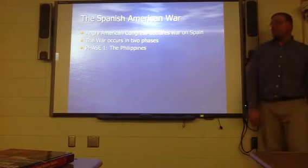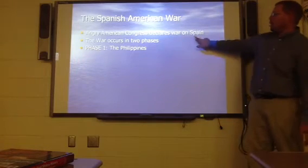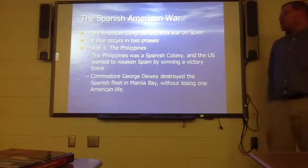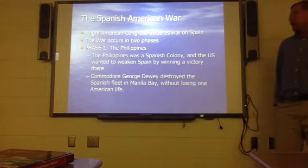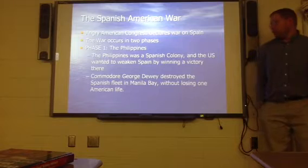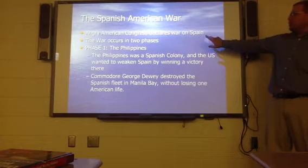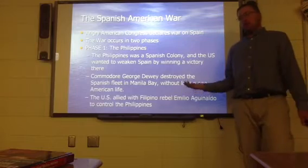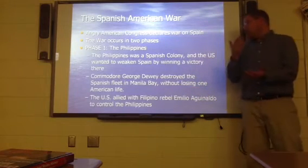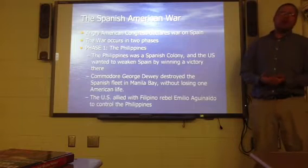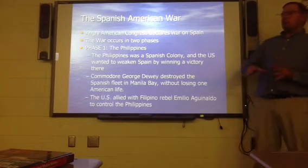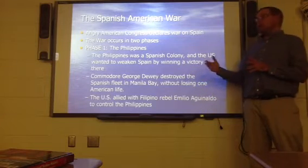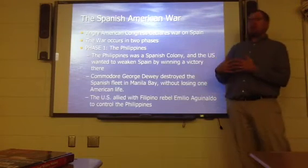The war occurs in two phases. Phase one is the Philippines. The Philippines were a Spanish colony, and the U.S. wanted to weaken Spain by winning a victory there. Commodore George Dewey destroyed the Spanish fleet in Manila Bay without losing one single American life. The U.S. was allied with Philippine rebel Emilio Aguinaldo to help control the Philippines, because we couldn't hold the Philippines without the rebel leader's help.